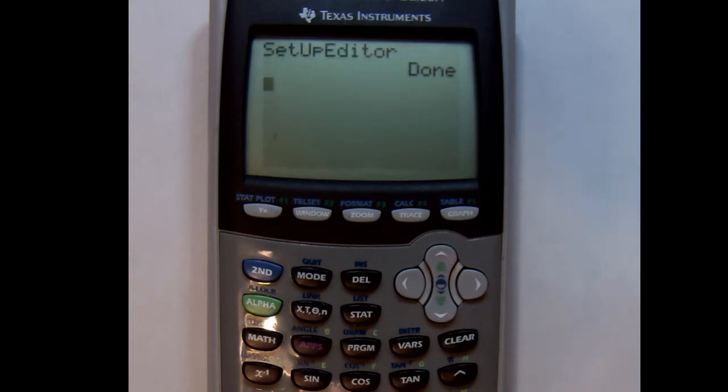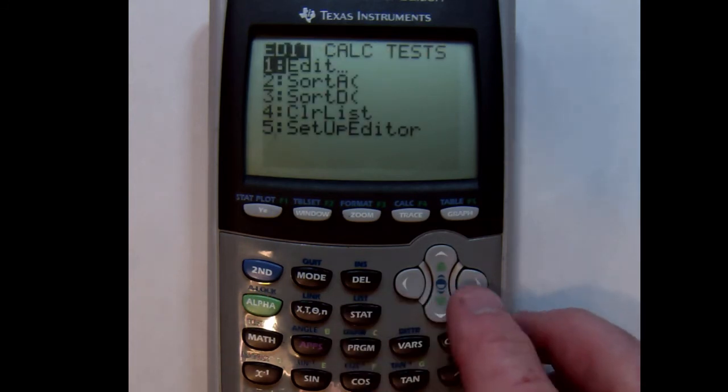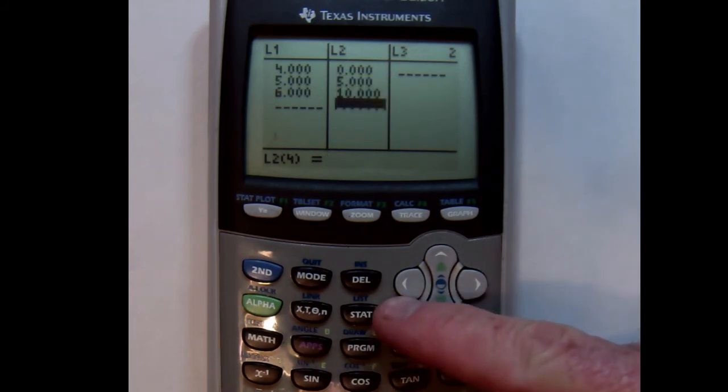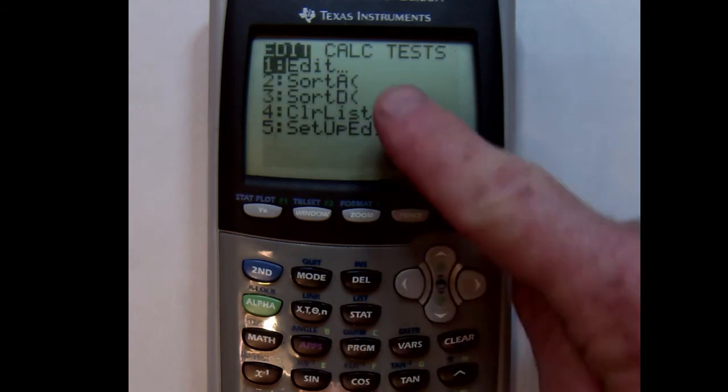So now when I go back, the lists are going to be there. So now I'm going to enter the data. So one person was Jack, had a four, a five, and a six.